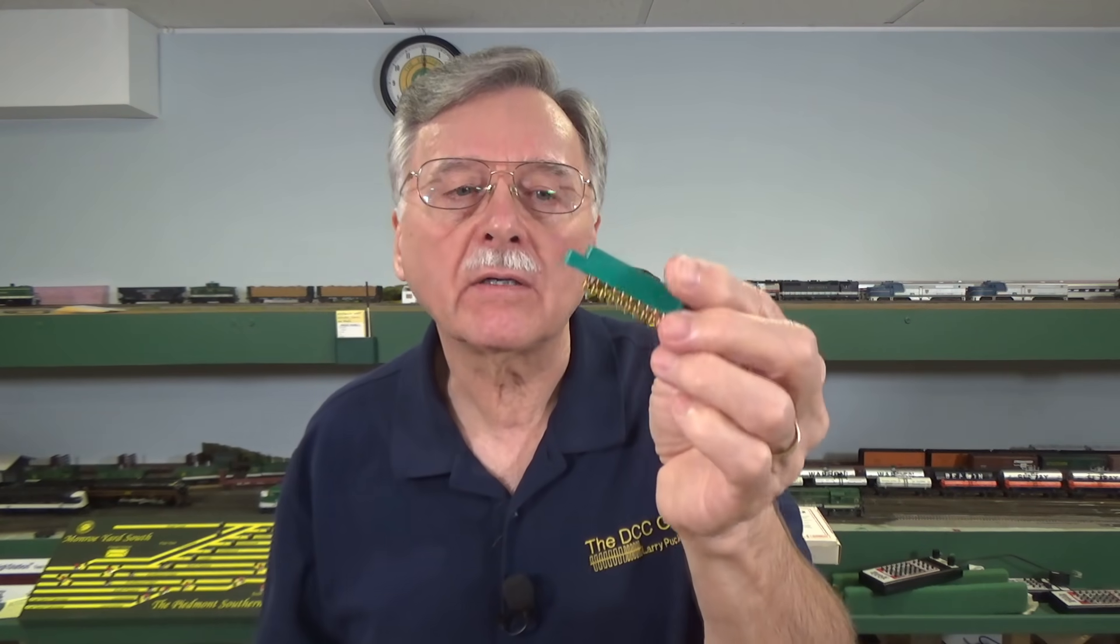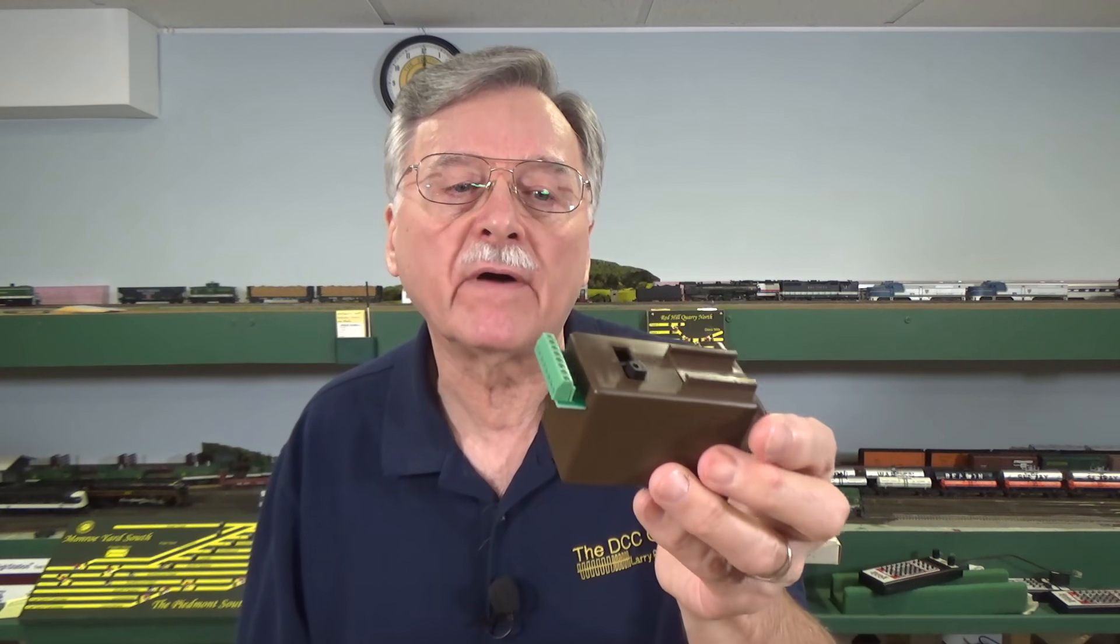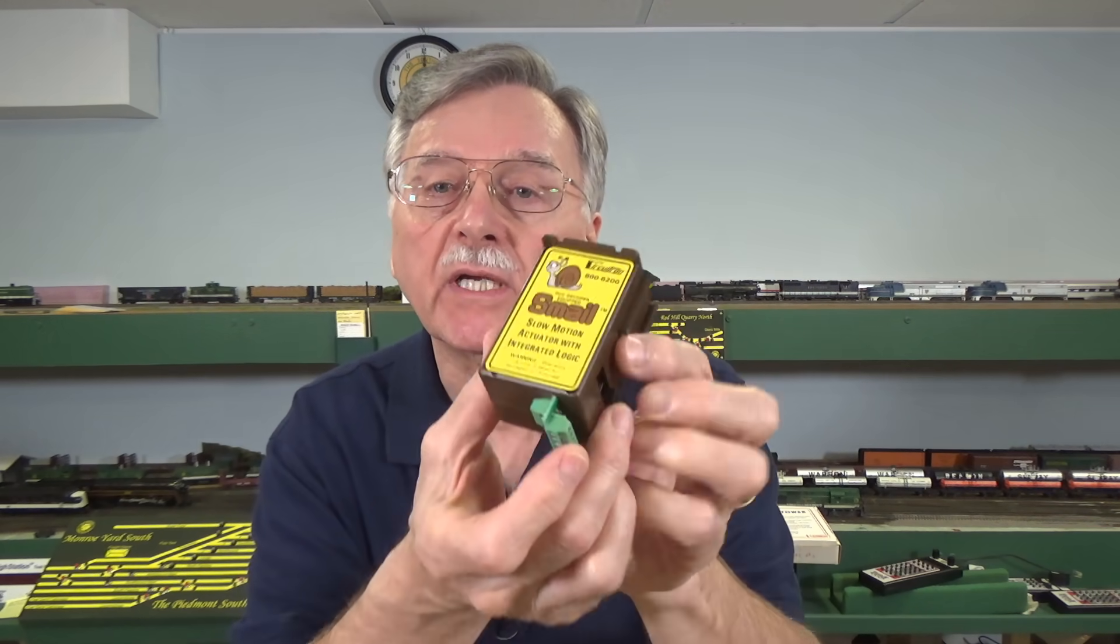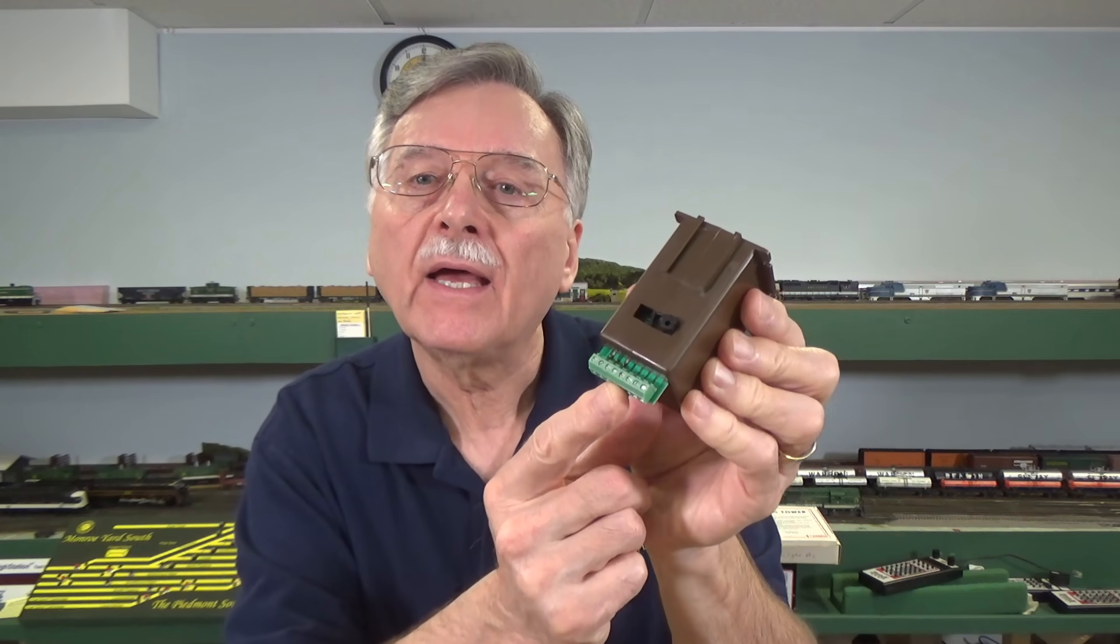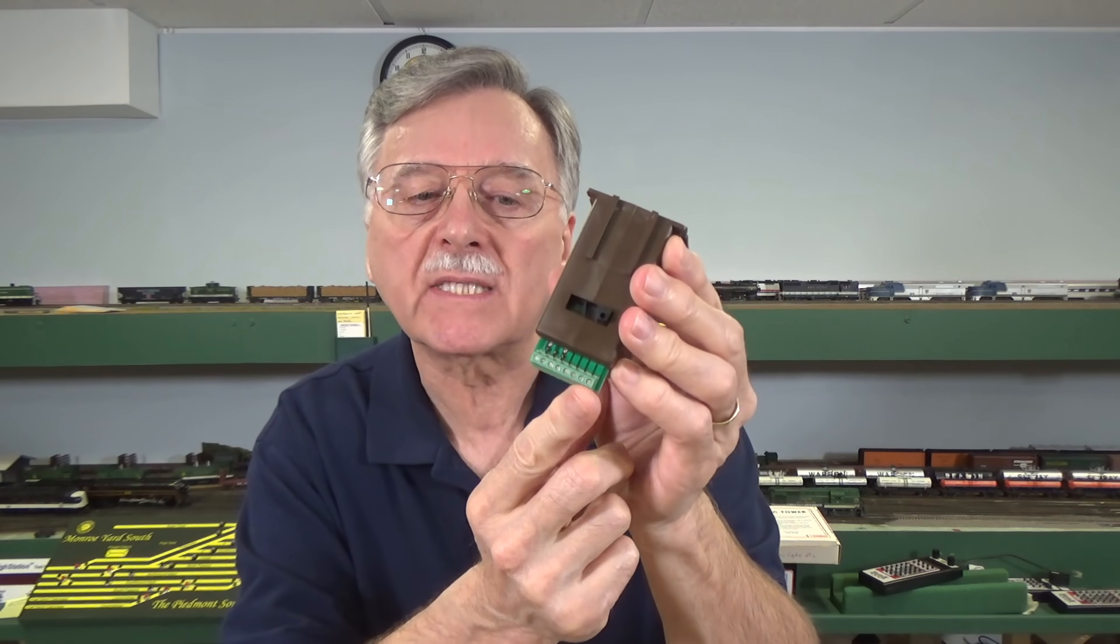These card edge connectors also come in a different version that have screw terminals on them. I can show you on the Smail, which is a different type of tortoise switch machine. It's made by Circuitron, but it has a DCC accessory decoder built right in. This particular version comes with a set of contact terminals soldered to the circuit board itself.